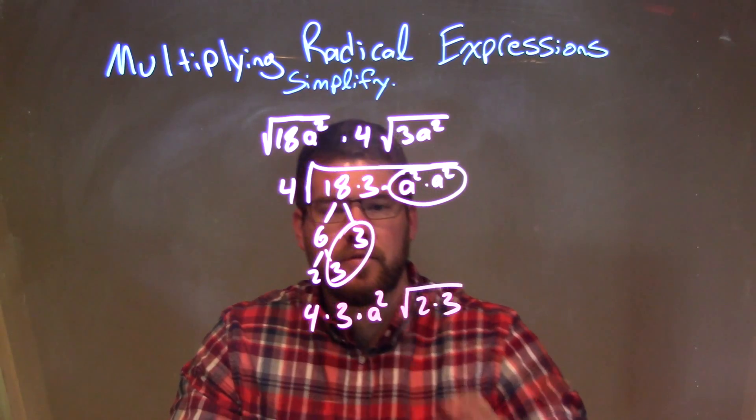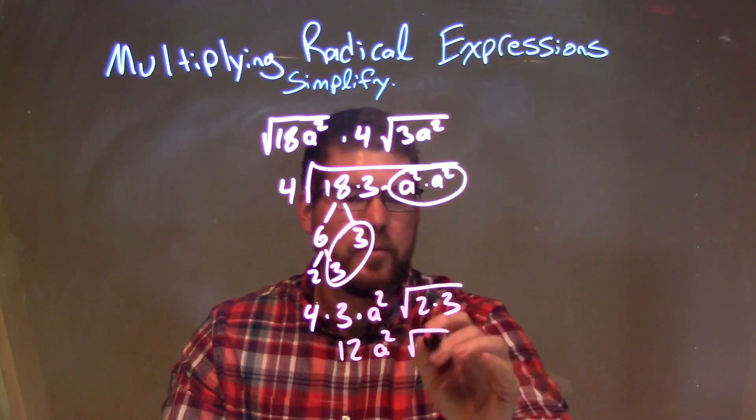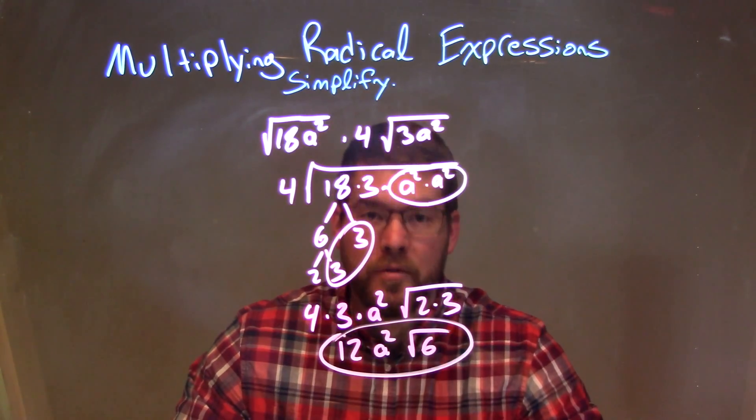So now when I simplify this, 4 times 3 becomes 12. a² is just right there. Then 2 times 3 is 6. And so my final answer is 12a² times the square root of 6.